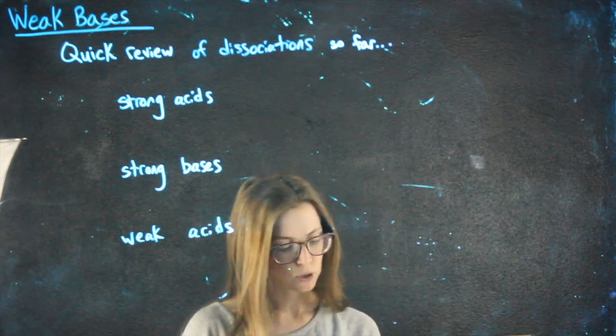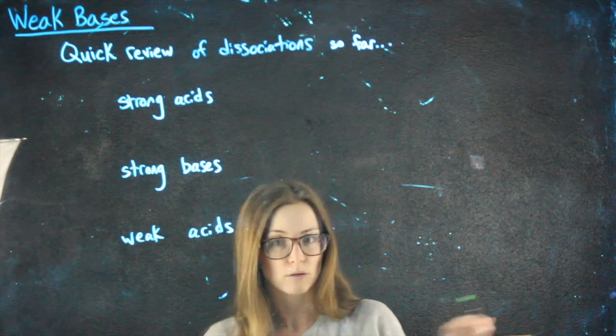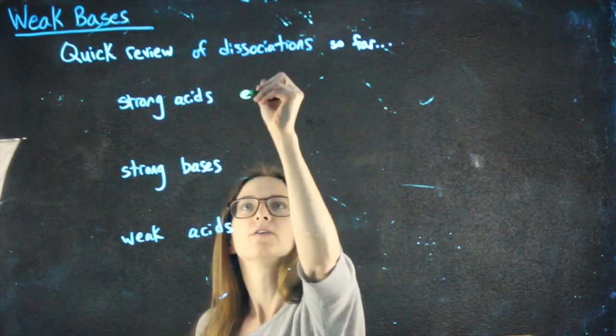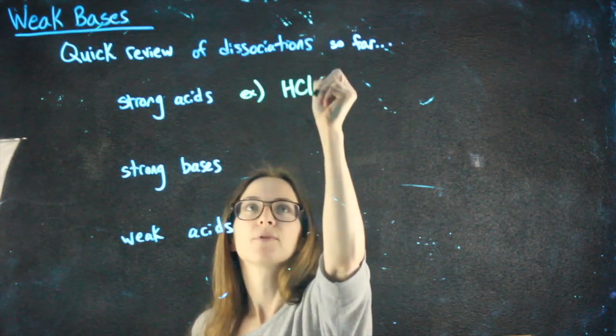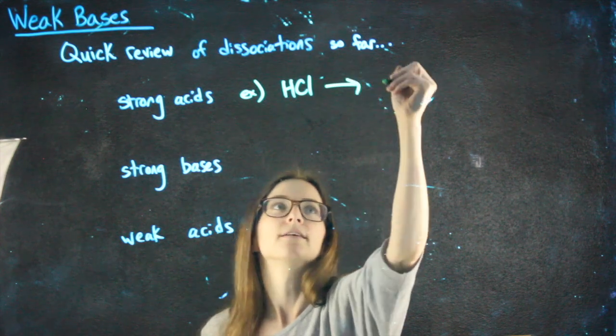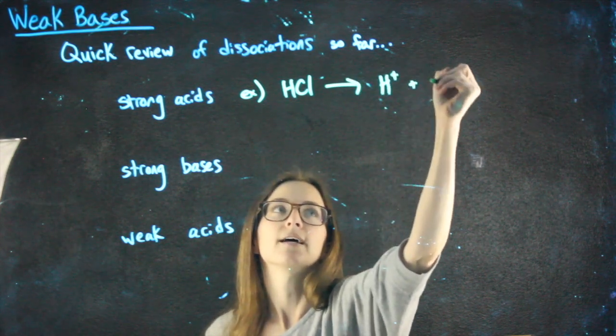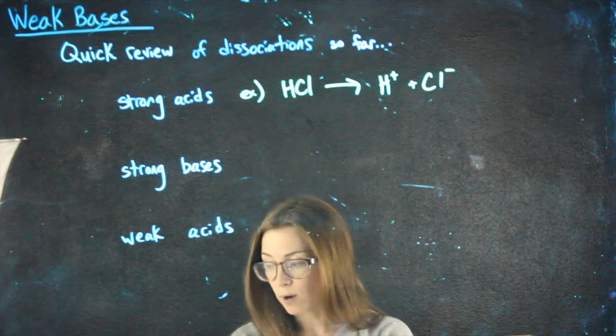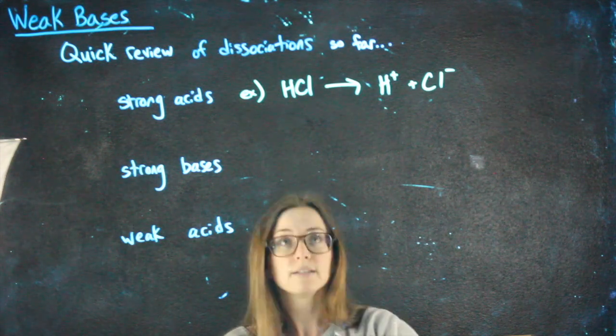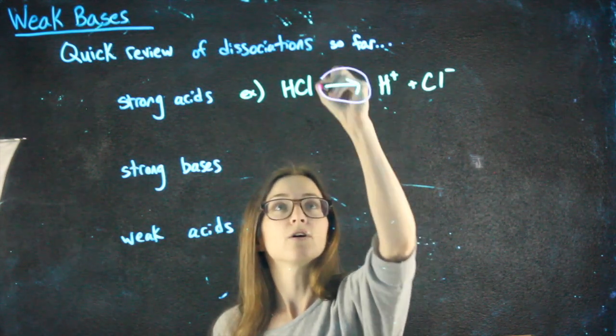For strong acids, we'll use an example of HCl, one of our six strong acids. For example, HCl would dissociate into H plus and Cl minus. A few things I want to point out about this. One is that I used a single arrow, not an equilibrium arrow.